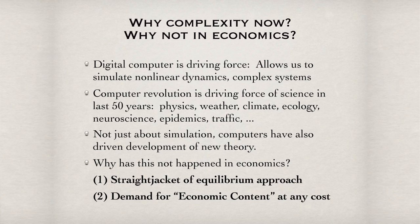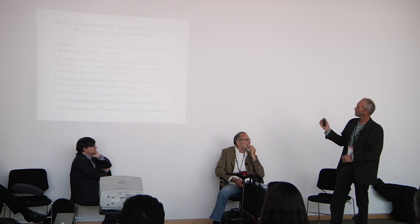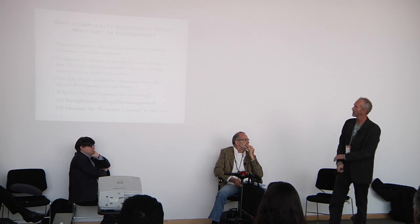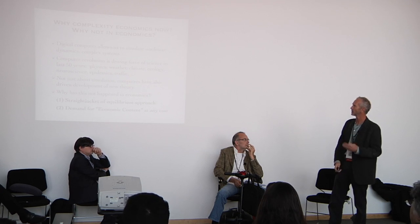Why has complexity emerged now, and why not in economics? I would argue the reason complex systems has emerged when it has is because of the digital computer. It allows us to simulate nonlinear dynamics and complex systems — before we had computers, we really couldn't do that. I had the privilege in nonlinear dynamics to experience the revolution of chaos, which was enabled by the digital computer. Visionaries like Poincaré could get the basic idea, but they just couldn't go far enough in working it out. The computer revolution is the driving force of science in the last 50 years — in physics, weather, climate, ecology, neuroscience, epidemics, traffic, and many other fields.